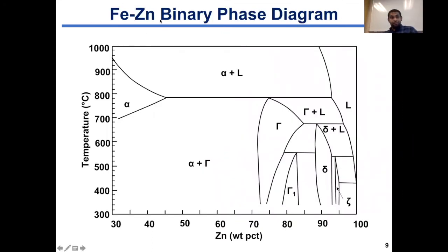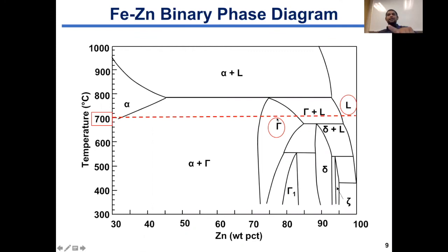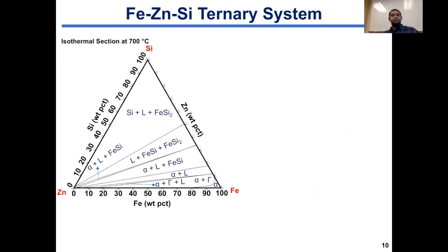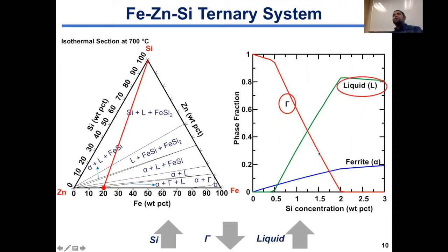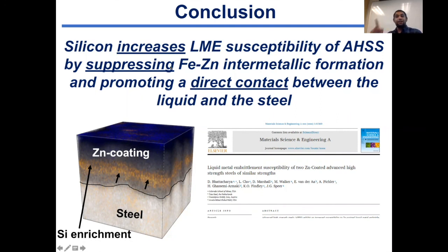Considering the binary Fe-Zn phase diagram at 700°C on the zinc-rich side, two phases should be in equilibrium: liquid and the gamma Fe-Zn intermetallic phase. To understand the relative stability of the gamma and liquid phases upon silicon addition, we refer to the Fe-Zn-Si ternary phase diagram. If we add silicon to a binary Fe-Zn alloy, the x-axis shows silicon concentration and the y-axis shows phase fraction. We see that the intermetallic phase amount decreases with increasing silicon concentration, with a progressive rise in liquid amount. So silicon addition destabilizes the intermetallic and increases the stability of the liquid phase. In conclusion, silicon increases the LME susceptibility of AHSS by suppressing Fe-Zn intermetallic formation and promoting direct contact between liquid zinc and the steel at elevated temperatures.